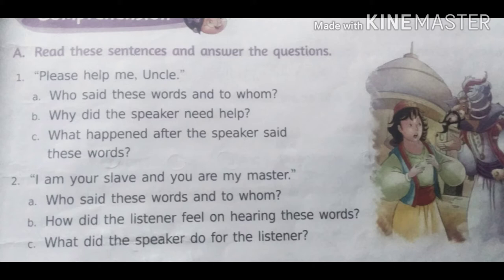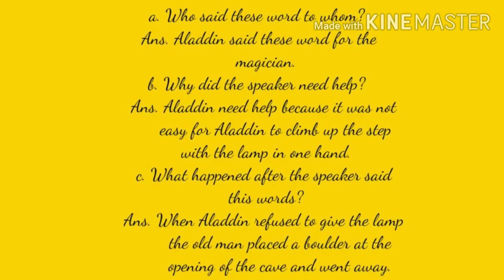The answer to the first question, who said this word to whom: Aladdin said this word to the magician. The next question is why did the speaker need help? The answer is Aladdin needed help because it was not easy for Aladdin to climb up the step with the lamp in one hand.